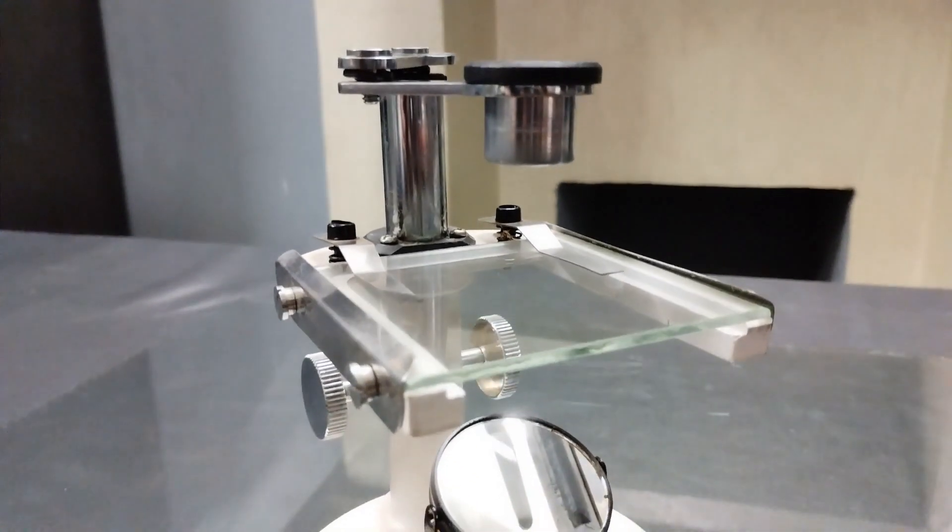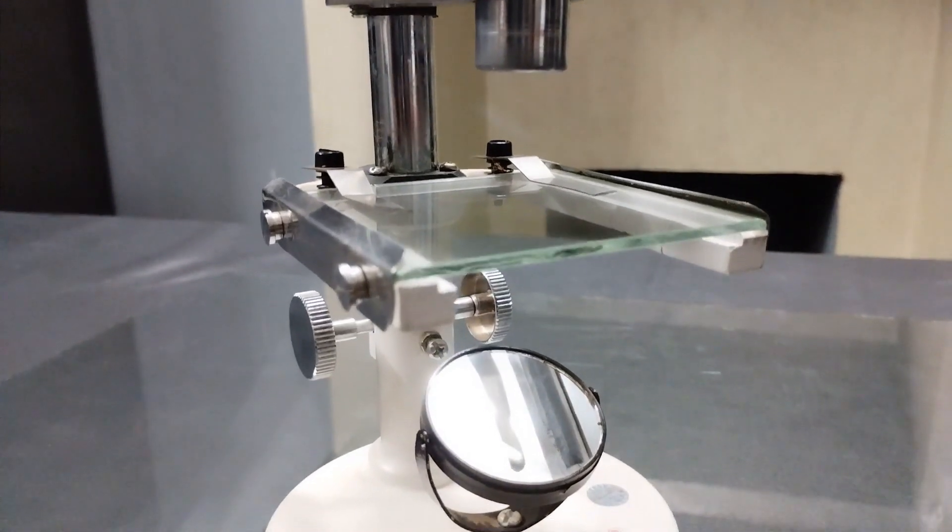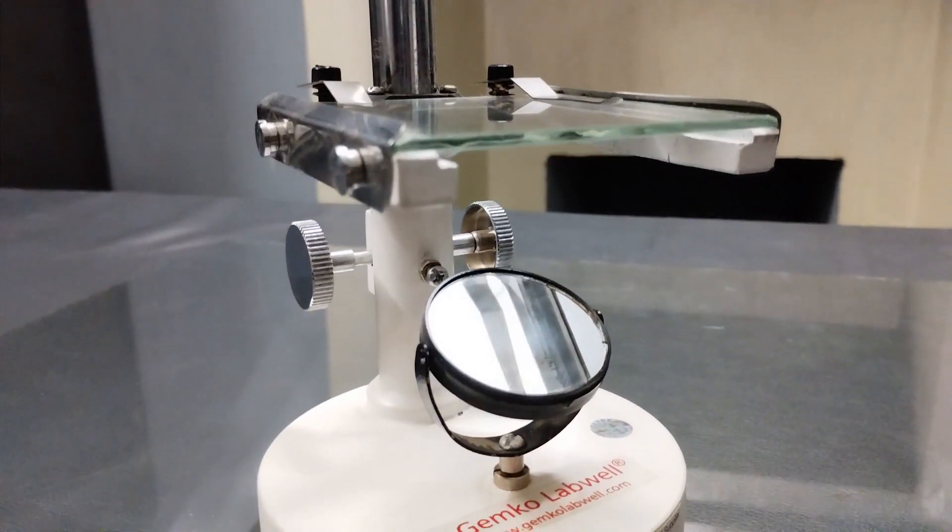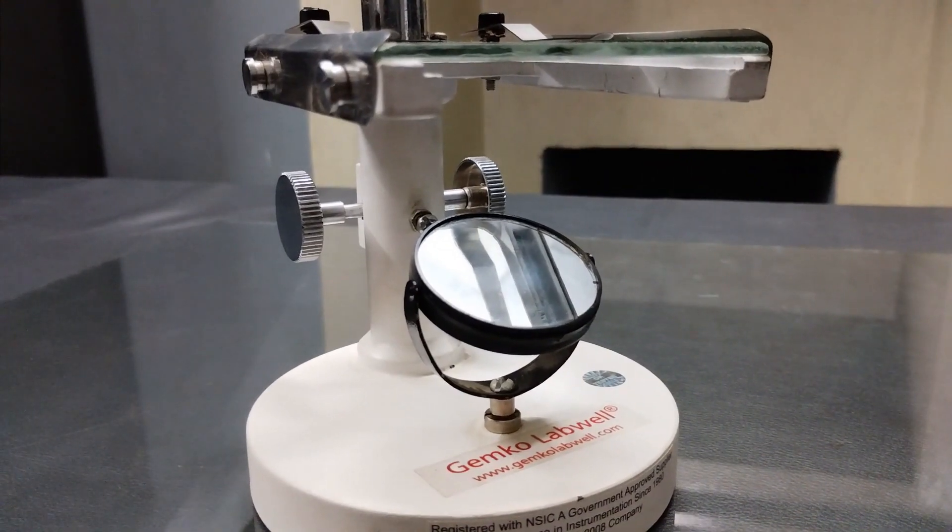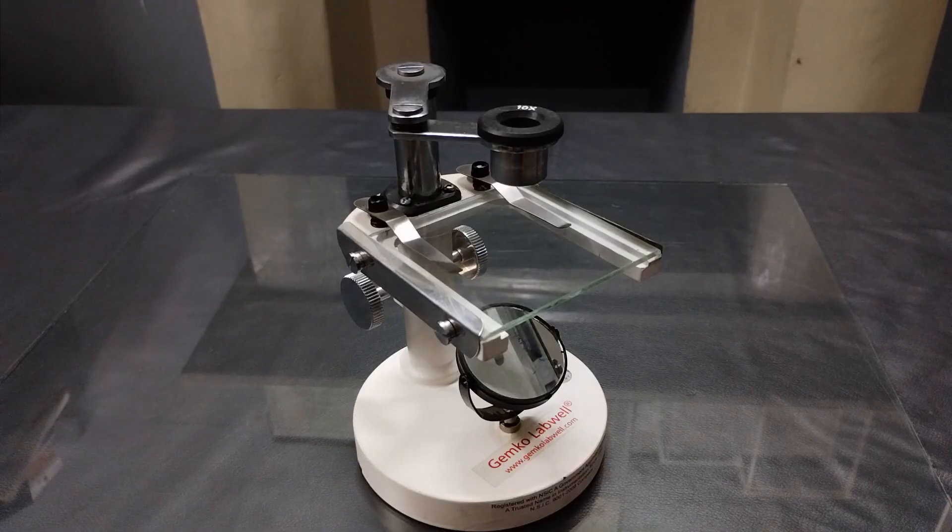Next to the iconic hand lens that we're all familiar with, the dissecting microscope is one of the simplest and least sophisticated magnifying instruments with a modest magnification range and a simple mechanical construct.